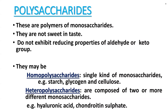The properties of polysaccharides: they are not sweet in taste, and they do not exhibit the reducing properties of aldehyde or keto groups — so they are all non-reducing sugars. They are divided into two types: homopolysaccharides and heteropolysaccharides. In homopolysaccharides, a single kind of monosaccharide joins together to produce the polymer.